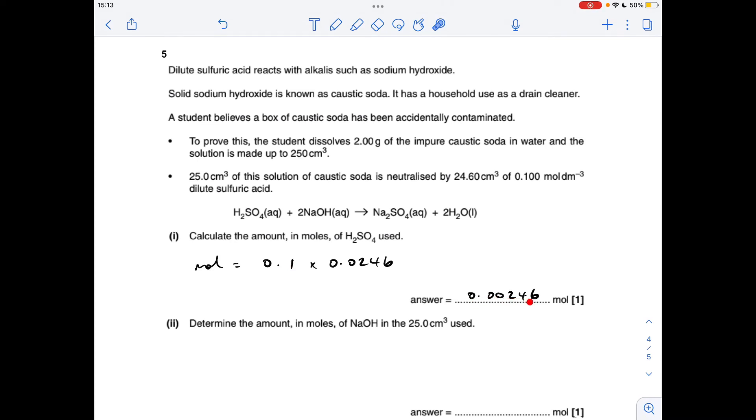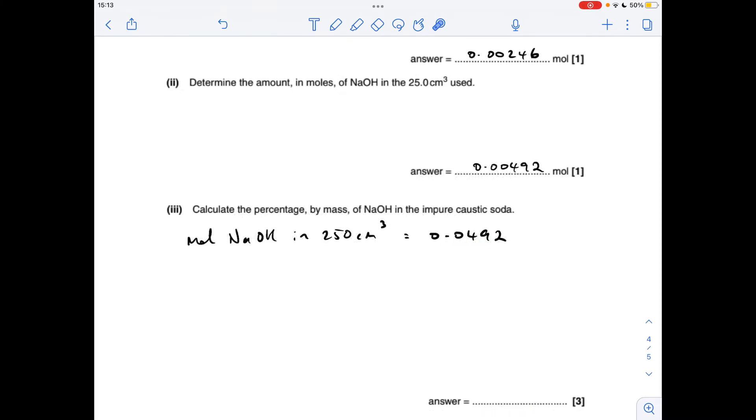And the final question: so the moles of sulfuric acid used is concentration times volume in decimeters cubed: 0.00246. Moles of sodium hydroxide is going to be twice as many, that's 0.00492. That's the moles in 25 cm cubed, but we want to find out how many moles of sodium hydroxide are in the original solution, which is 250 centimeters cubed, so we just multiply this value by 10: so that's 0.0492. Then we convert that to grams by multiplying by the MR of sodium hydroxide, so that gives a mass of 1.968 grams of sodium hydroxide in that caustic soda. So the percentage by mass of sodium hydroxide in the caustic soda is the mass of sodium hydroxide over the mass of the sample, which was 2 grams, times 100: 98.4 percent.